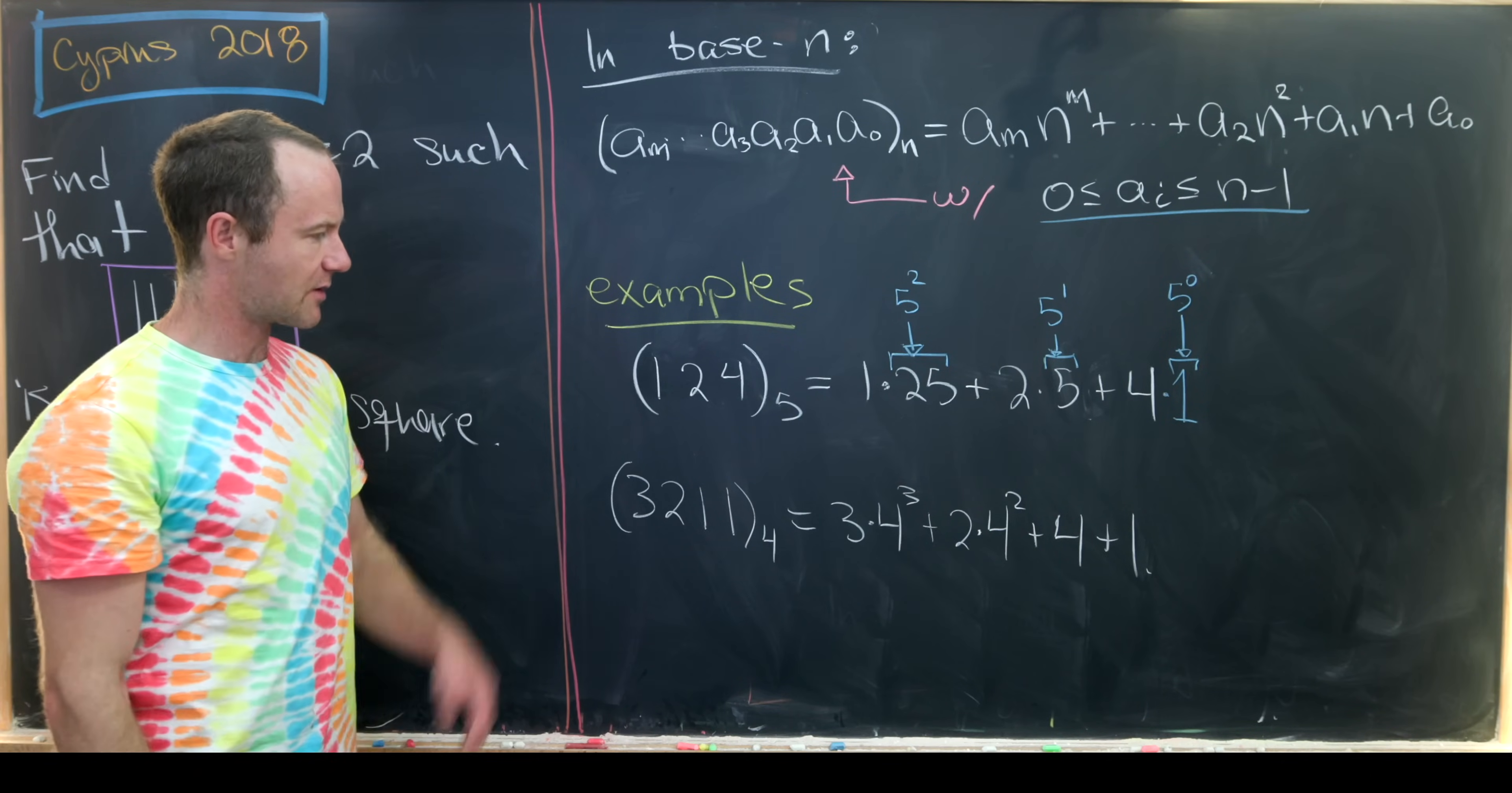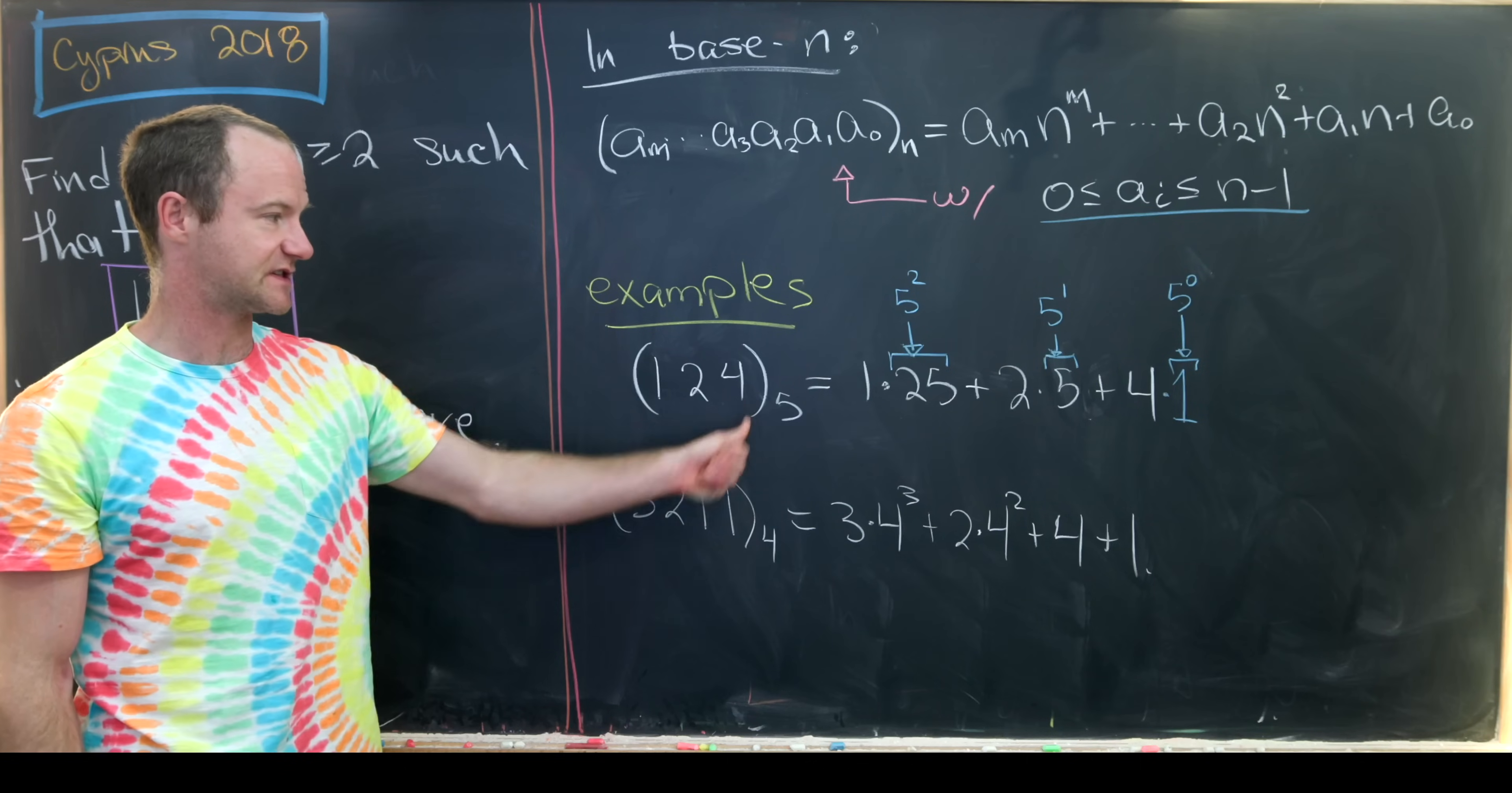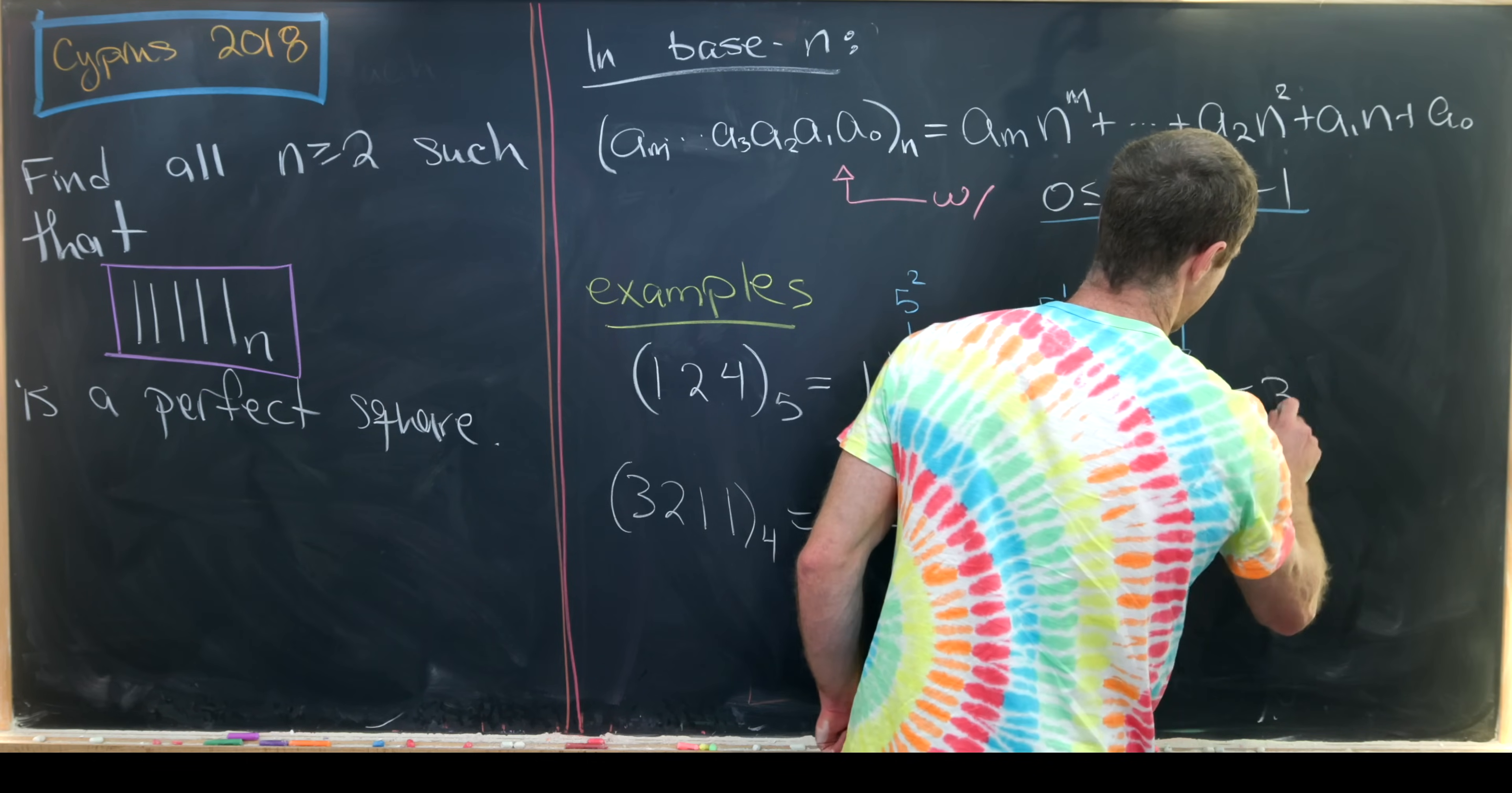So here are a couple of examples. So in base 5, the number 1, 2, 4 is 1 times 25 plus 2 times 5 plus 4. This is the 5 squared digit, this is the 5 to the first digit, this is the 5 to the 0 digit. So written in base 10, what do we have here? Well, that's going to be 25 plus 10. So that's 35 plus 4 is 39.